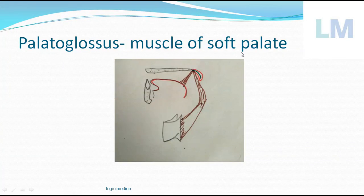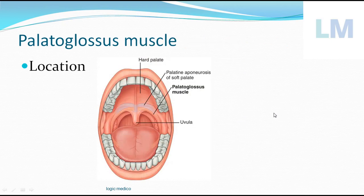Palatoglossus is a muscle of the soft palate. As the name suggests, it begins from the soft palate, which is a muscular curtain covered by mucous membrane. The framework of the soft palate is formed by fibrous tissue called the palatine aponeurosis. Palatoglossus is mainly situated in the palate and ultimately gets attached to the lateral border of the tongue.